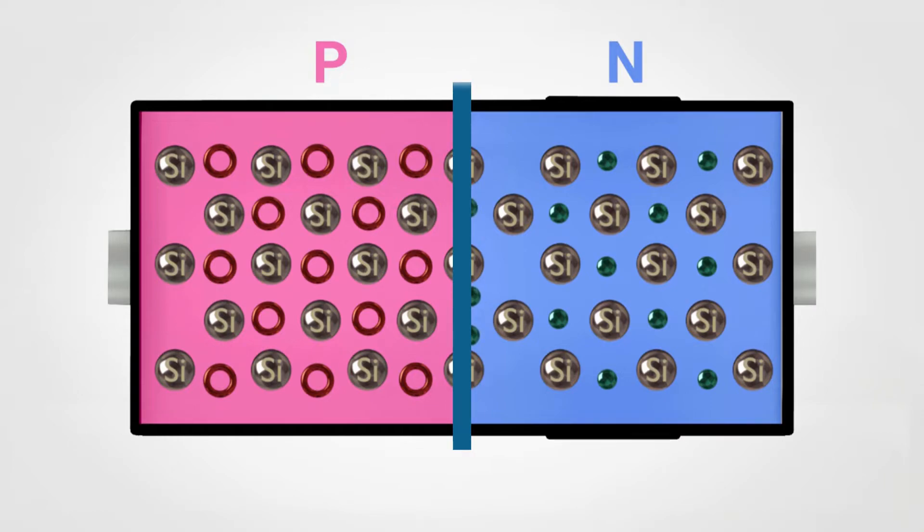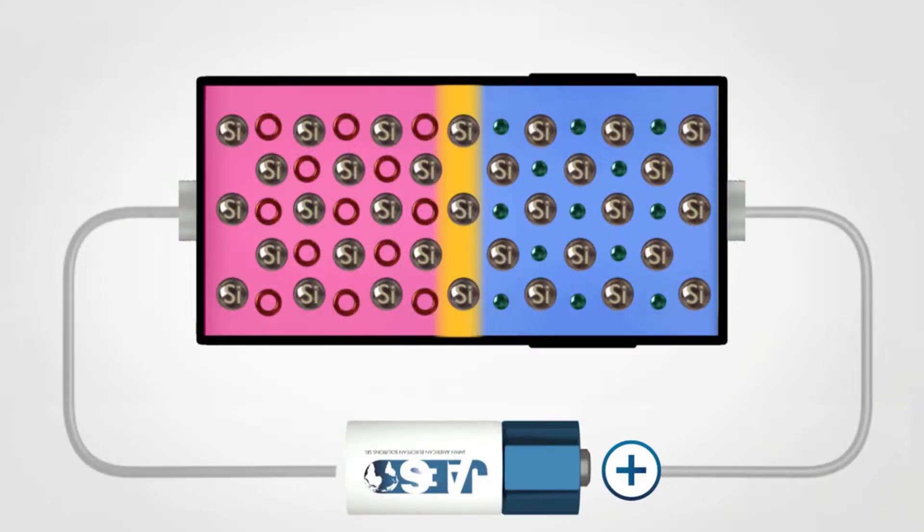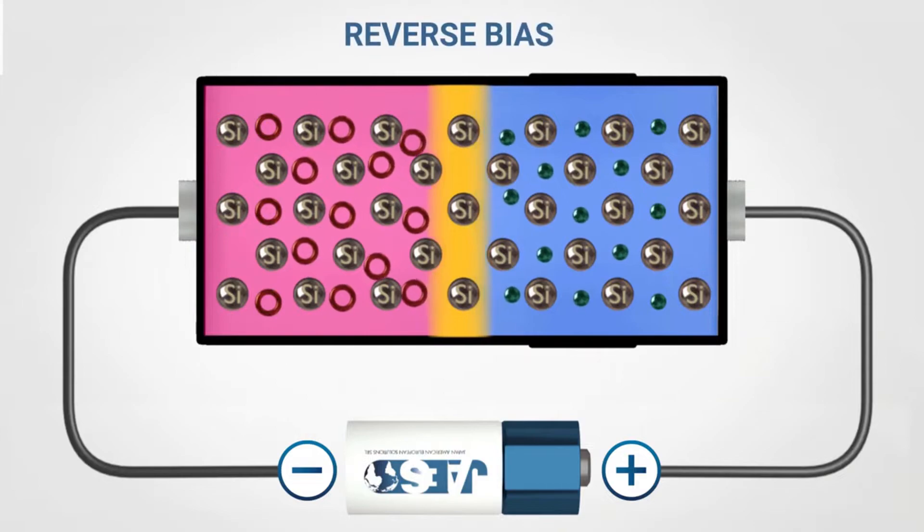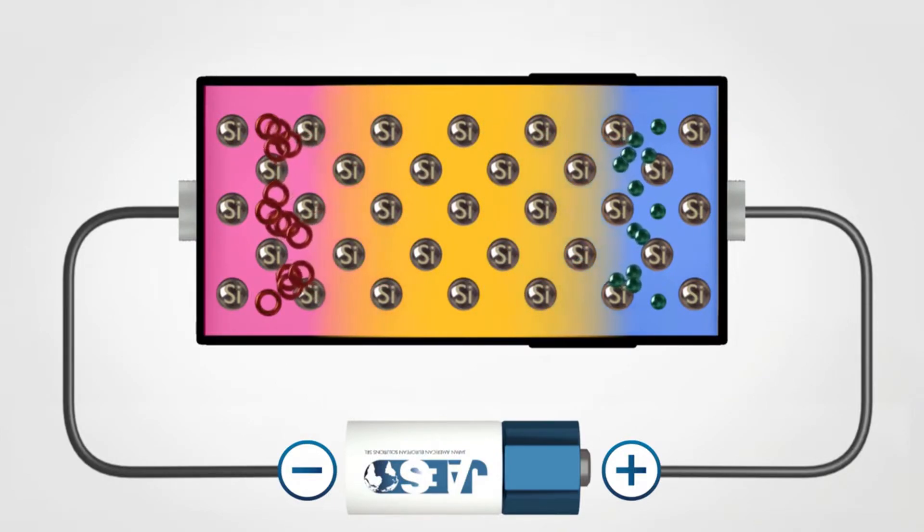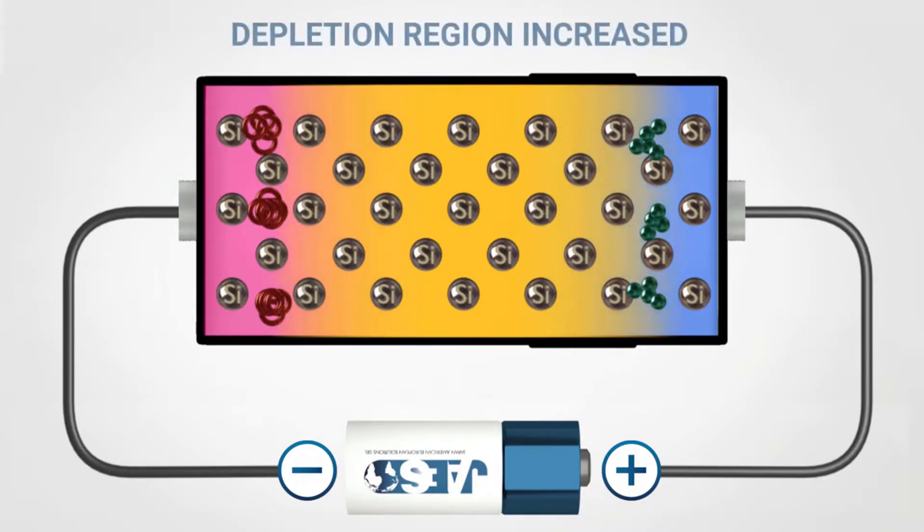By connecting the diode's cathode to the positive pole and the anode to the negative pole of a battery, an inverse bias condition is obtained. Therefore, the electrons and the holes are attracted in order to polarize the P-N junction and consequentially block the current flow by increasing the depletion region.